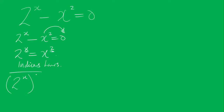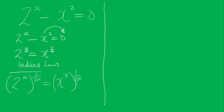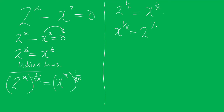Raising both sides to the power of 1 over 2x: 2 to the power x, all raised to 1 over 2x, equals x to the power 2, all raised to 1 over 2x. The x cancels, giving 2 to the power 1 over 2 equals x to the power 1 over x.